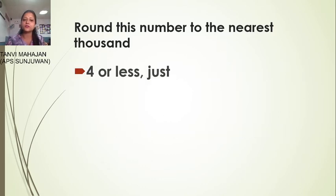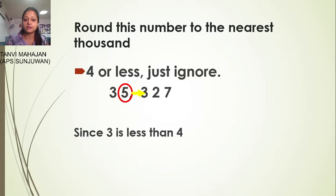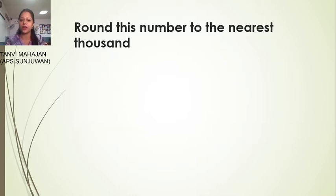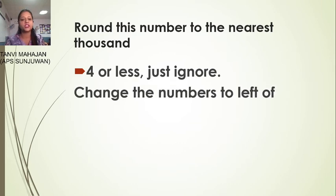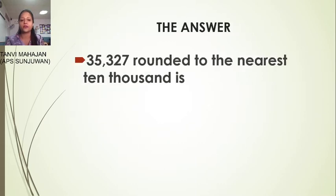Next line: four or less, just ignore. Five has three next door. Since three is less than four, we do not change the five — four or less, just ignore. Change the digits to the right of five to zeros. The answer is 35,000. Thirty-five thousand three hundred twenty-seven rounded to the nearest thousand is 35,000.